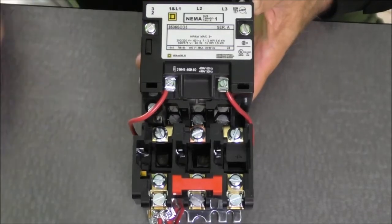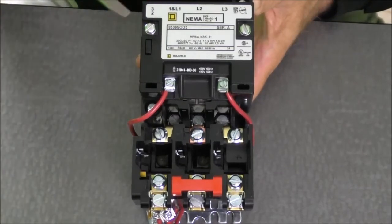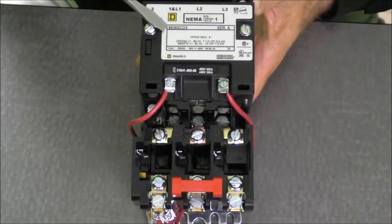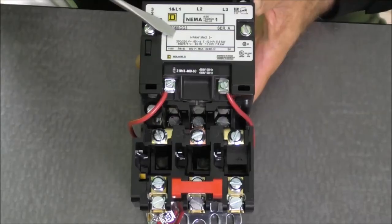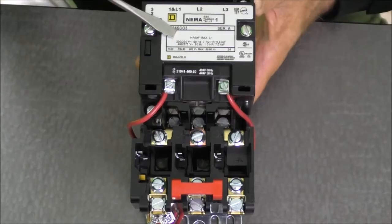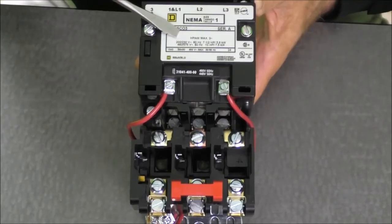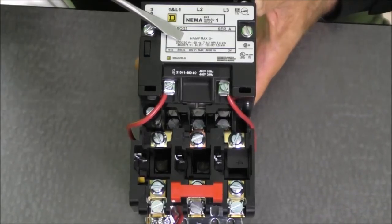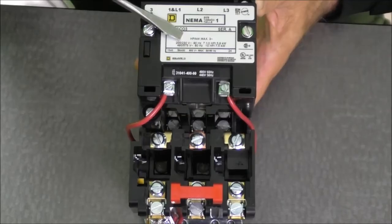It is a NEMA size 1 starter. On the nameplate we can see our catalog number. It begins with an 8536. The first letter after the 6 is an S for Type S. The C will represent a NEMA size 1. The O will tell me that is an open starter.